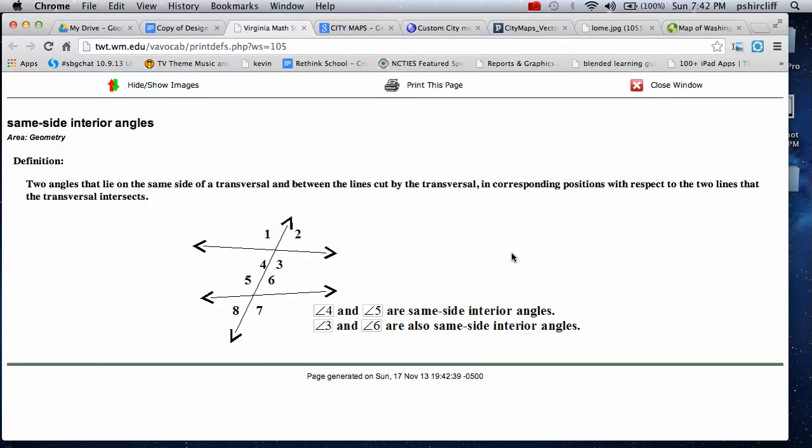Same side interior - instead of alternate interior. We've got three and six being same side interiors. They're on the inside and they're on the same side. Four and five, same side interiors.